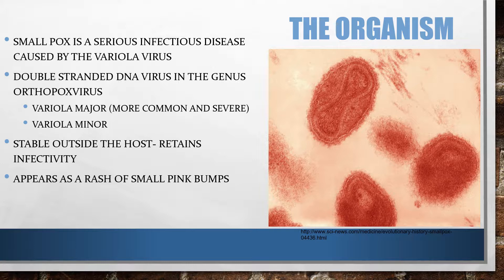Variola minor is not as severe and a little less common. The smallpox you've heard of in the past — with the horrible rashes on the skin and people dying — is probably variola major. Smallpox is also stable outside of the host, so it does retain its infectivity. It doesn't necessarily have to be in somebody to get someone else sick, and it appears as a rash of small pink bumps all over the body.